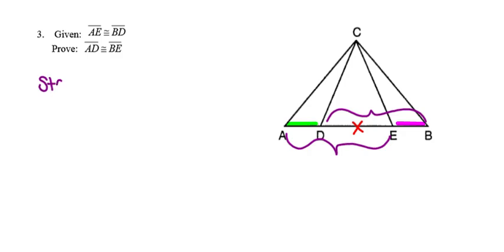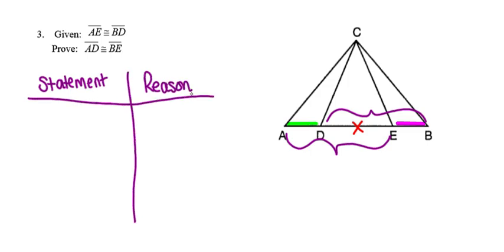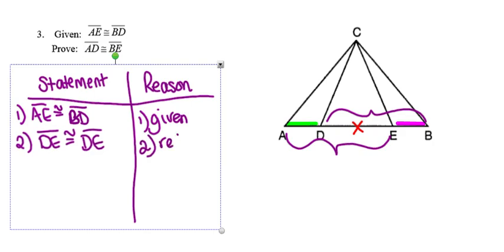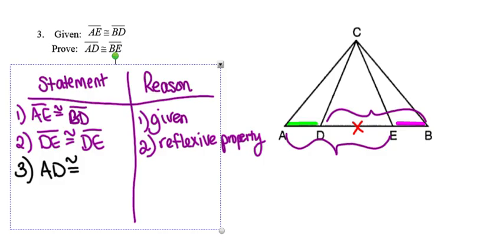For the two-column proof, I start with the given statement: segment AE is congruent to segment BD — given. The pieces we want to subtract from both segments are DE, which is congruent to itself by the reflexive property. Using the picture: starting with AE and subtracting DE, the piece left is AD. Starting with BD and subtracting DE, the piece left is BE.